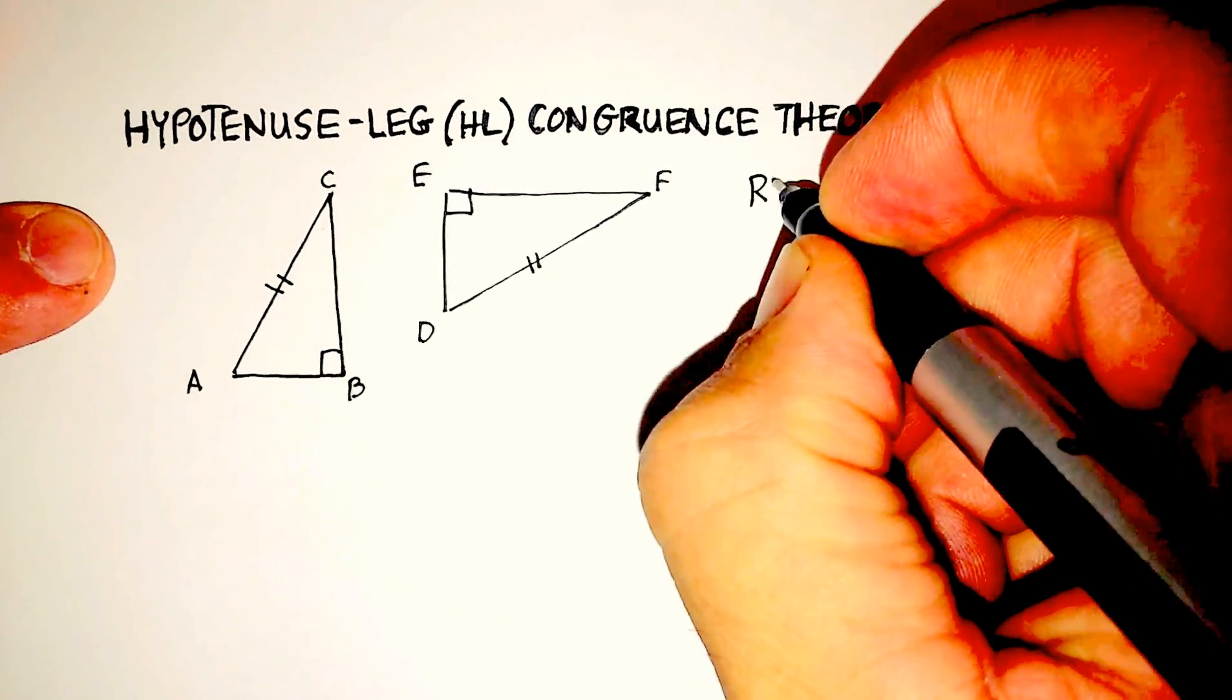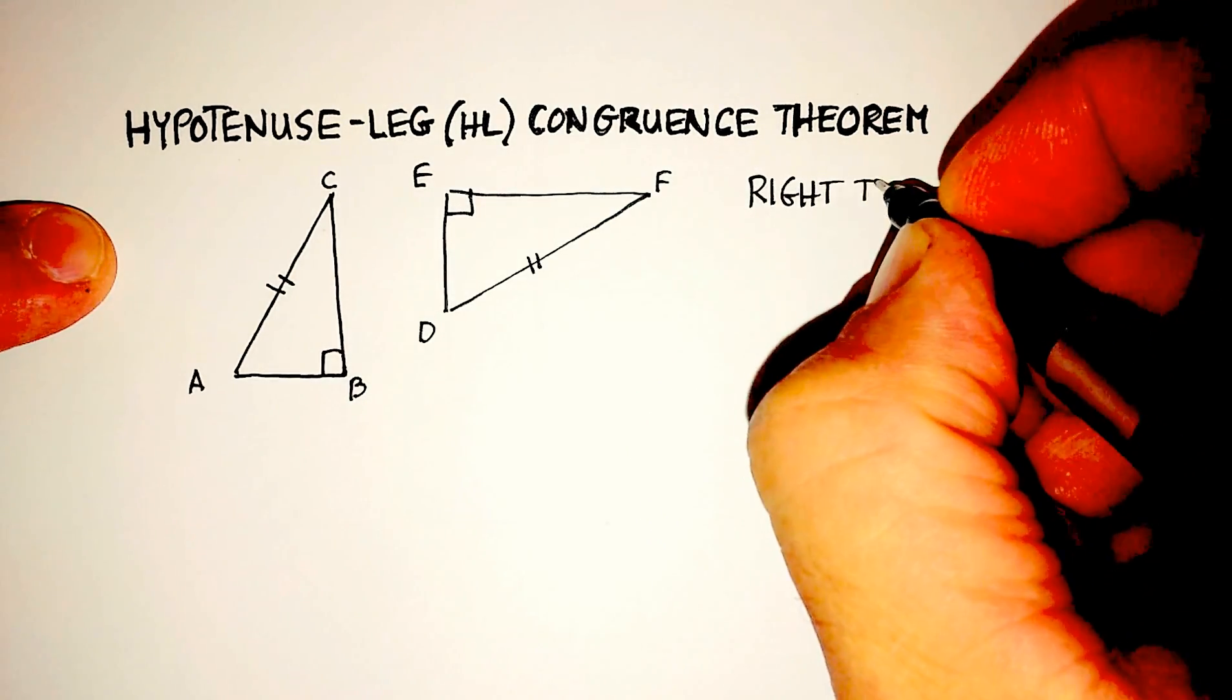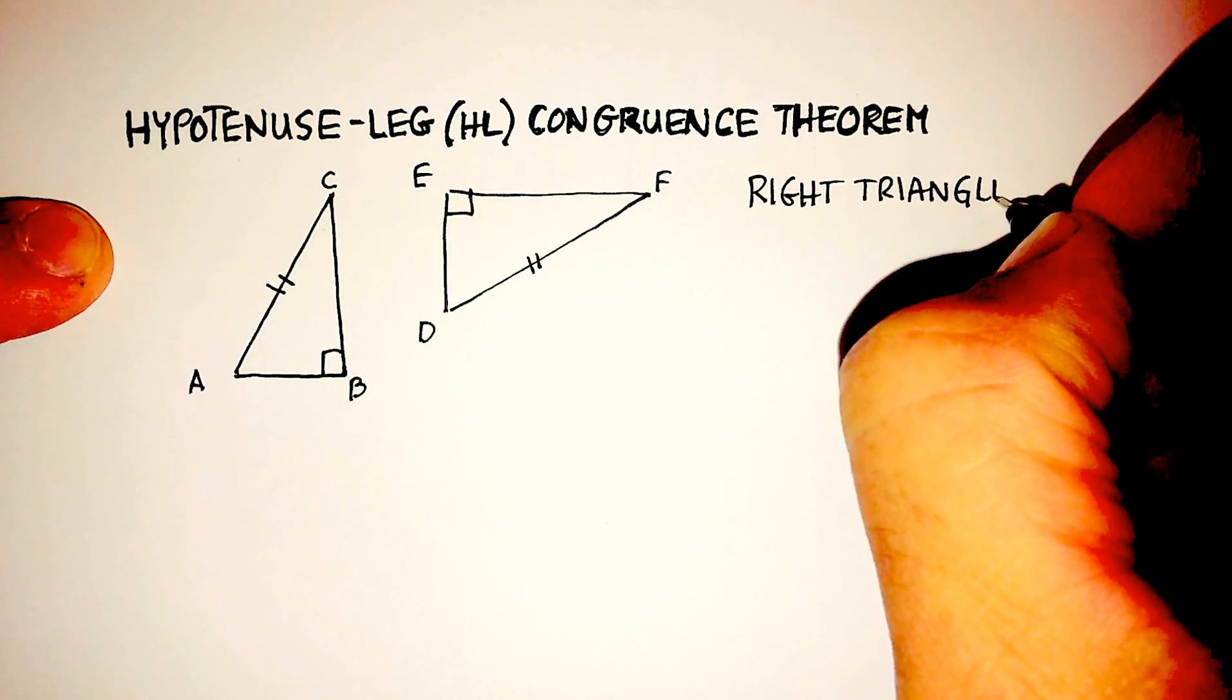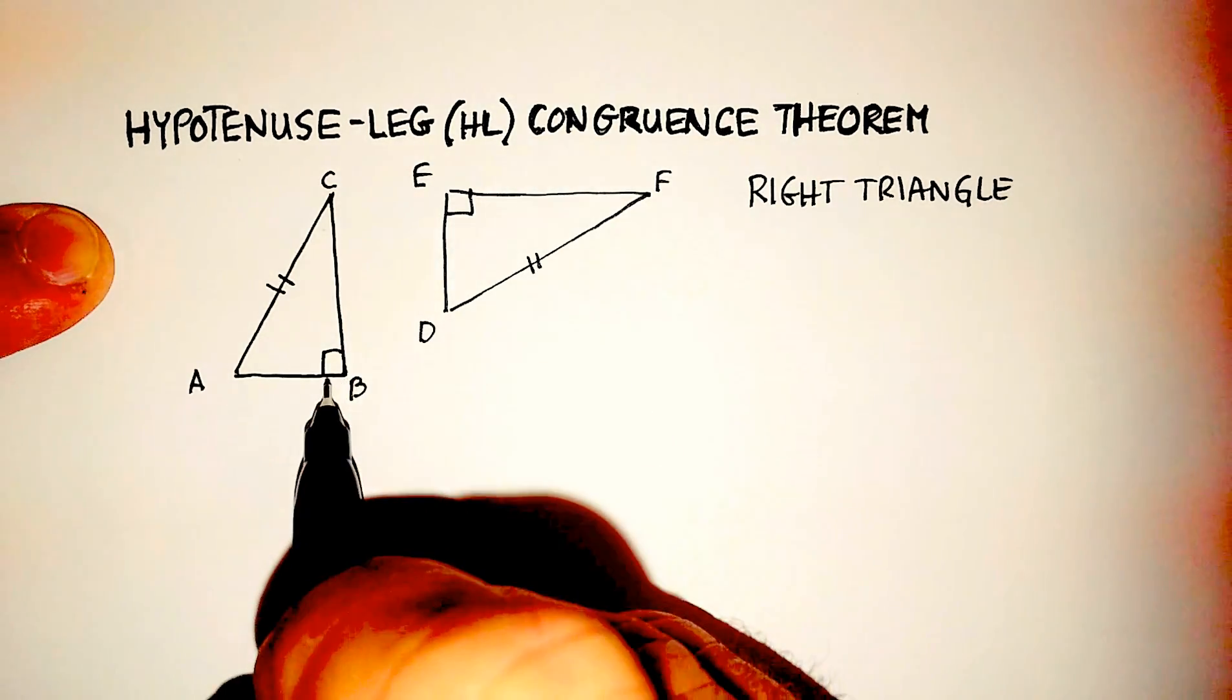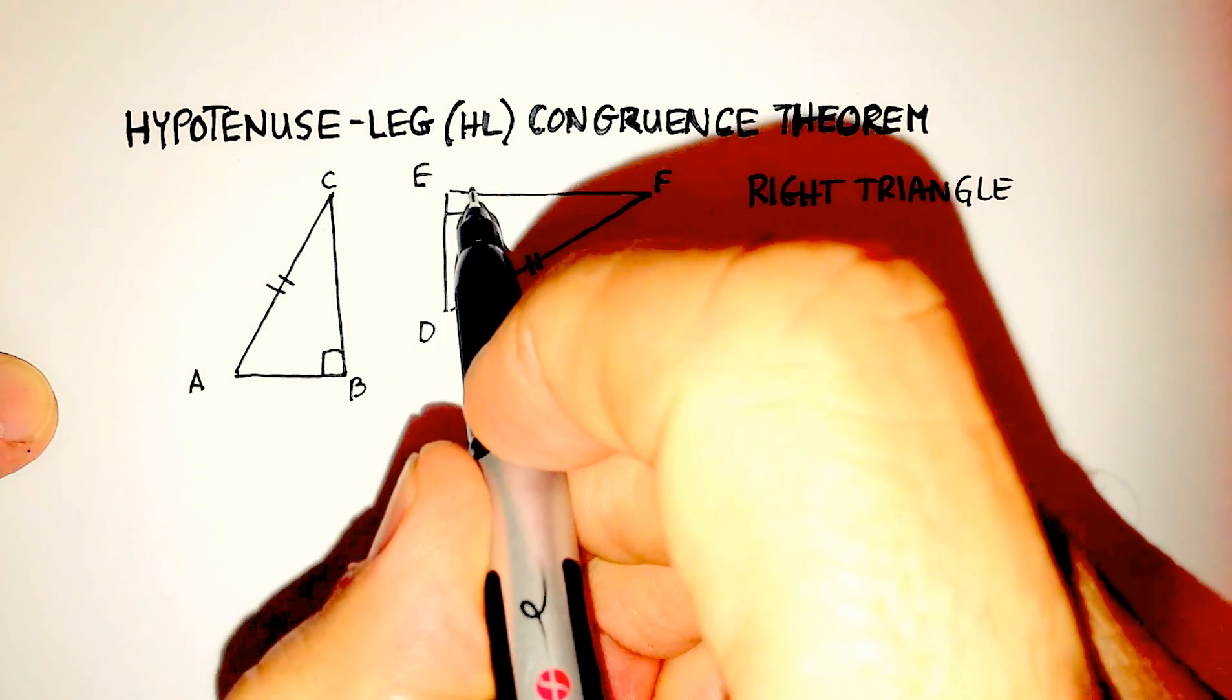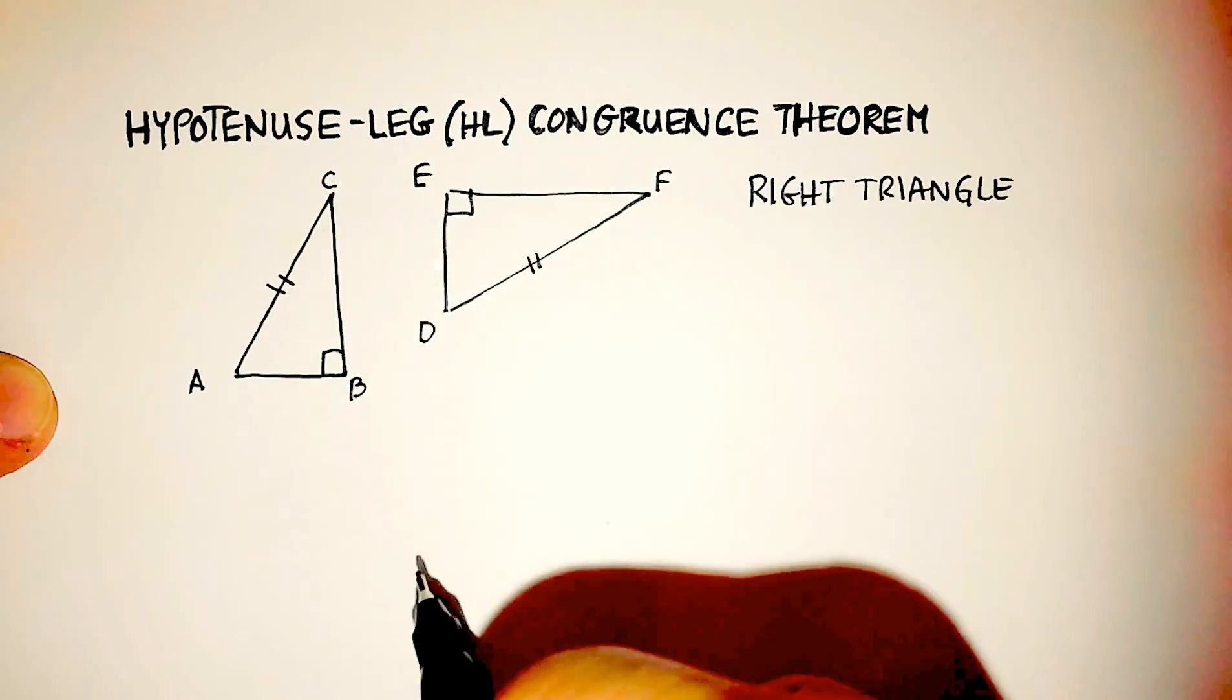Remember what a right triangle is. The right triangle has a 90 degree angle in it. And remember that 90 degree angles are marked by these little squares right here, which means that this is a 90 degree angle.